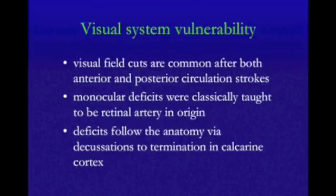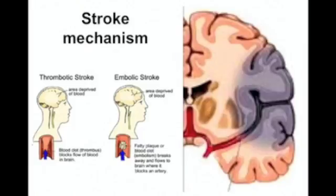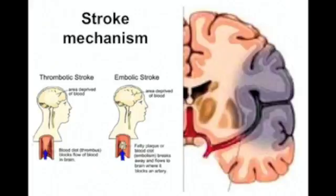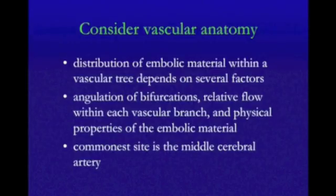The deficits follow the anatomy via decussations to the termination of the striate cortex — the where determines the what and will also determine the etiology of the stroke, and we're interested in preventing strokes. I'm mainly going to be talking about deficits caused following thrombotic or thromboembolic stroke — not hemorrhage, not venous thrombosis — so strokes that occur after occlusion of the major cerebral blood vessels or their branches.